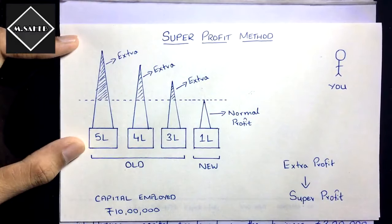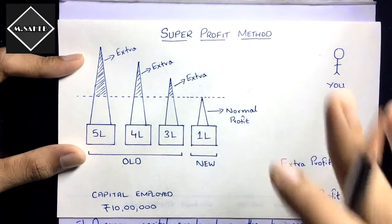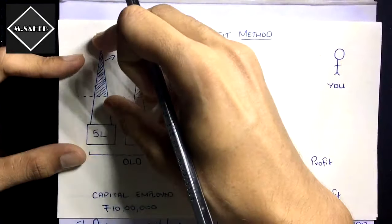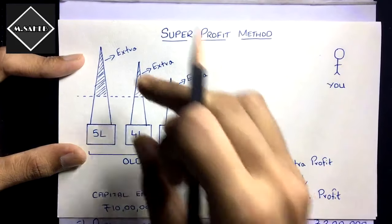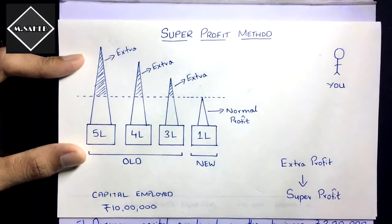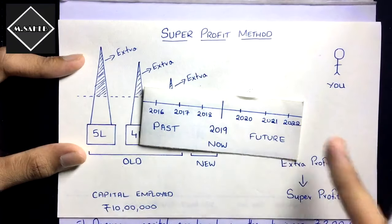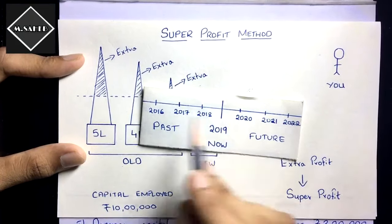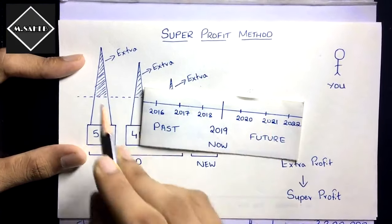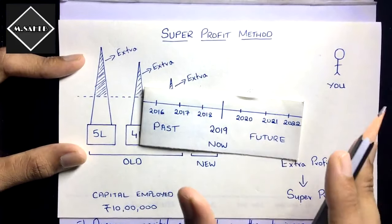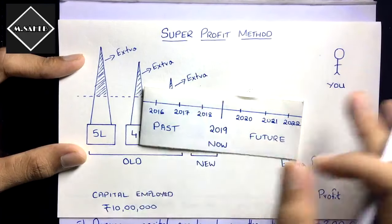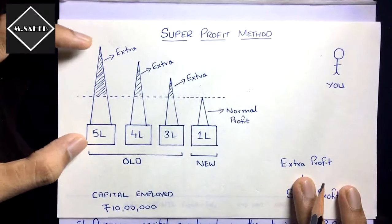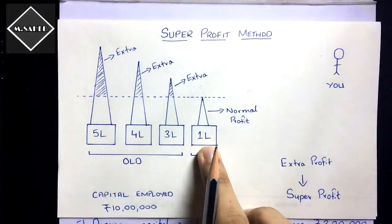This is the concept of the super profit method. To calculate goodwill of a business, we take the super profit and multiply it by the number of years purchased — for how many years the business will be able to earn that super profit. Super profit is the profit above normal profit. For example, if a business earns 5 lakh and normal profit is 1 lakh, then 4 lakh is the super profit.